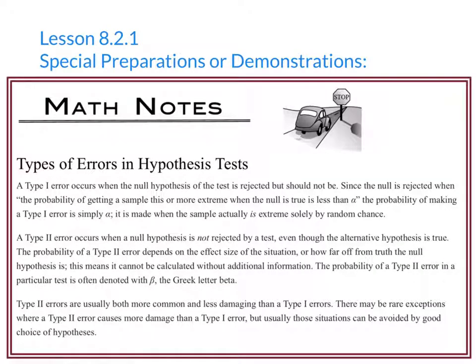Type 1 and type 2 error are then formalized in a math notes box. Because a null hypothesis can never be accepted, we can only fail to reject it. That makes a type 2 error erroneously failing to reject a null hypothesis, which is a triple negative. You might want to be ready to provide an explanation to your students for this.